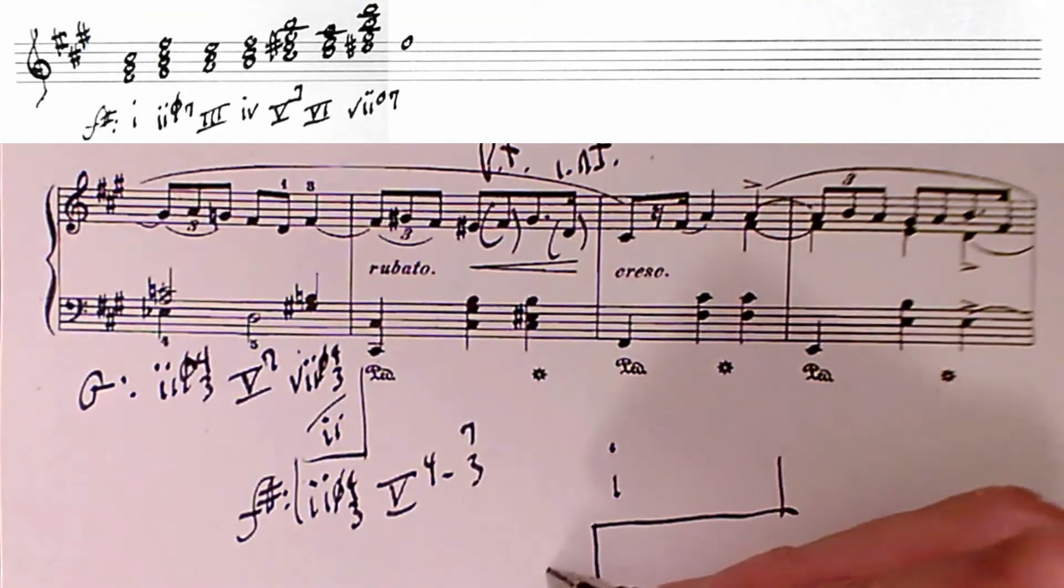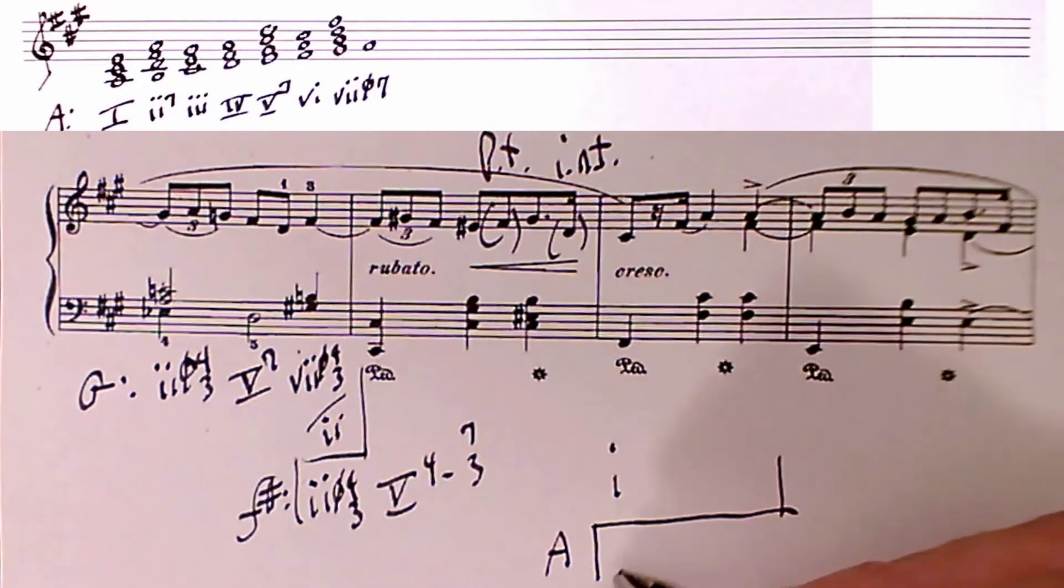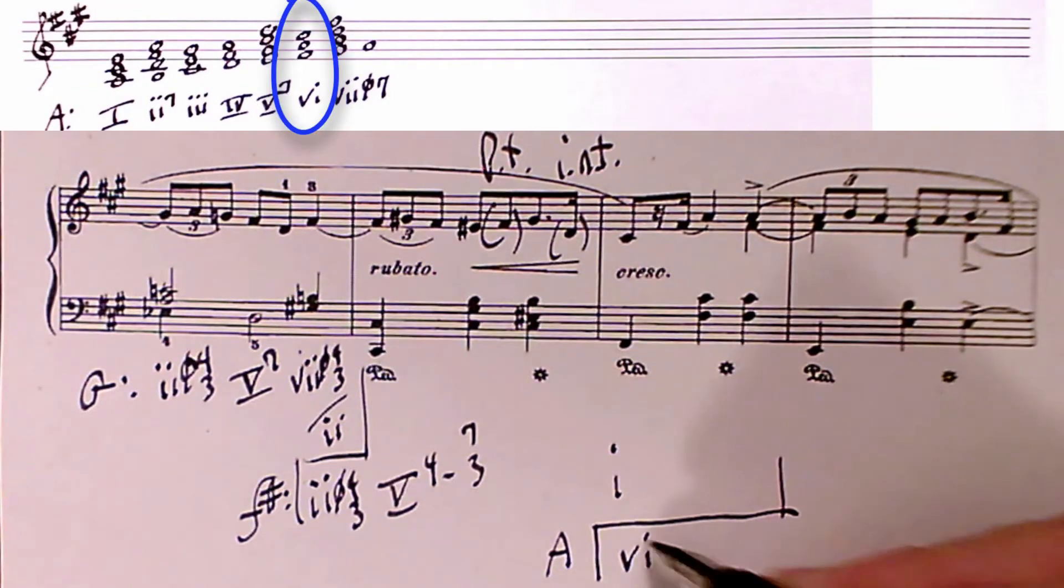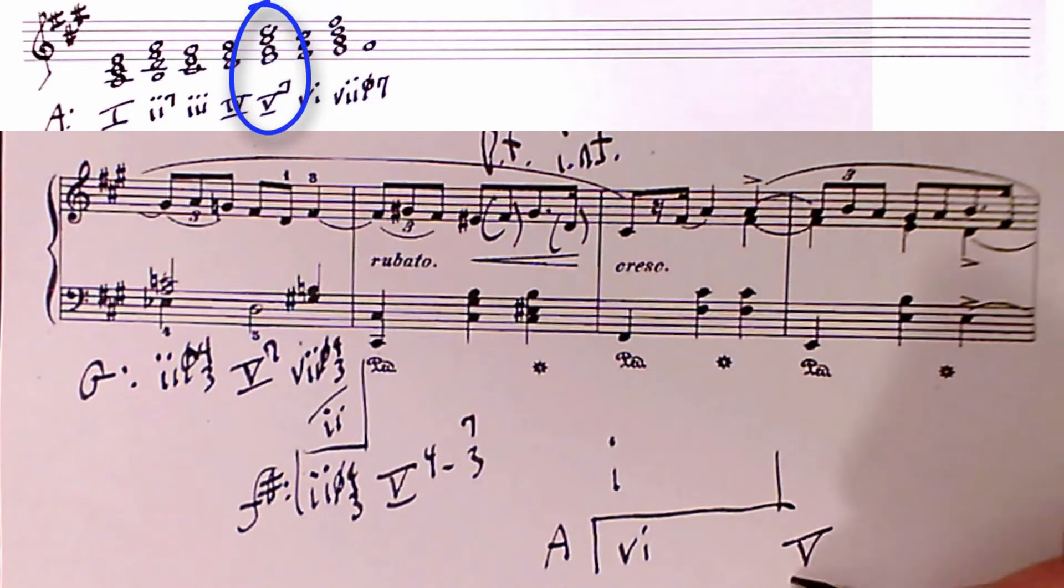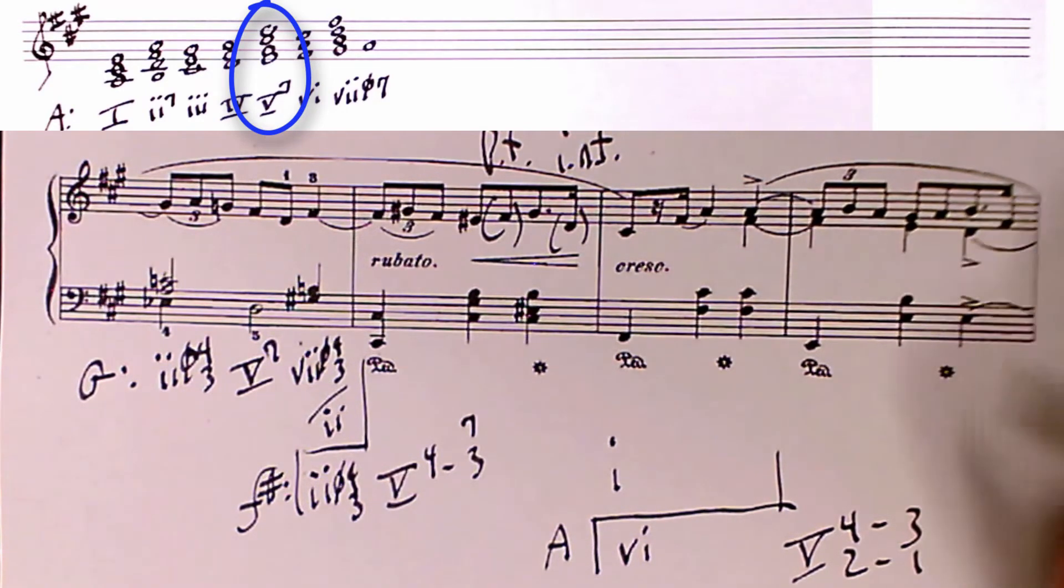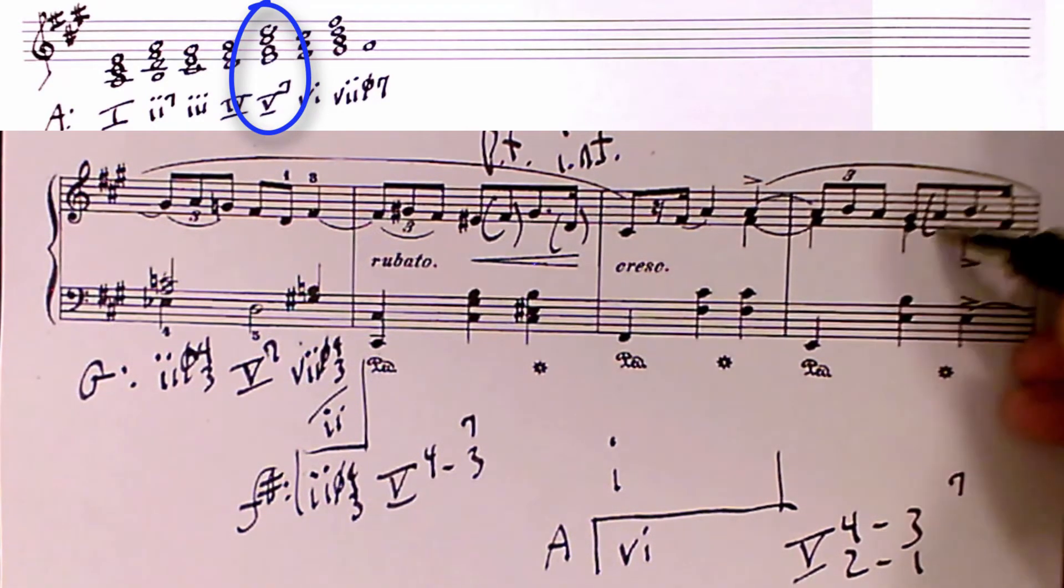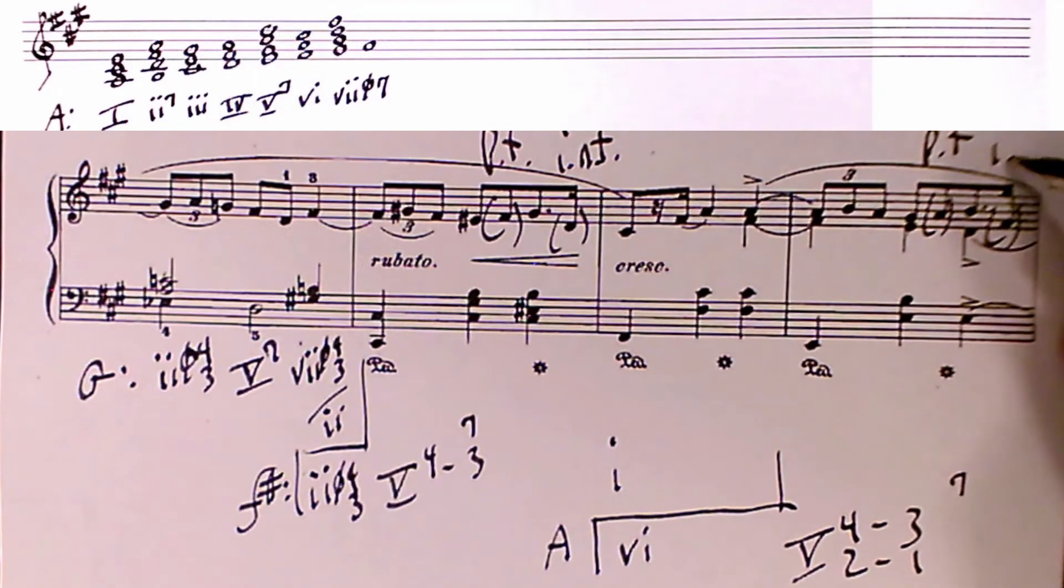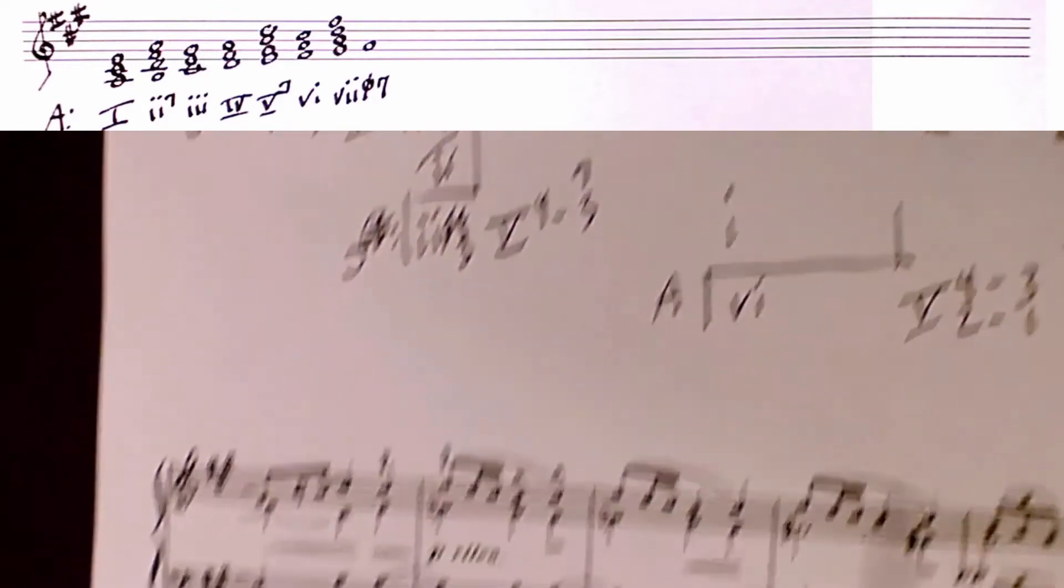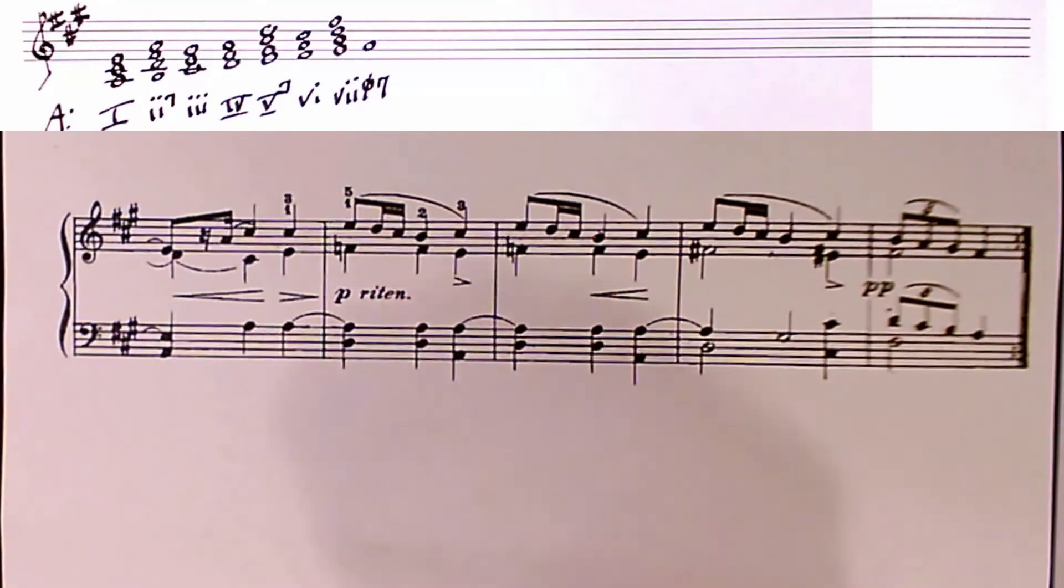Here we're seeing the modulation to A again. So we have a pivot chord, the sixth chord, going to five with the double suspension again, four three, two one, the seventh arriving here, and the passing tone here, and the incomplete neighbor there. And this time the key of A sticks around a little bit longer.